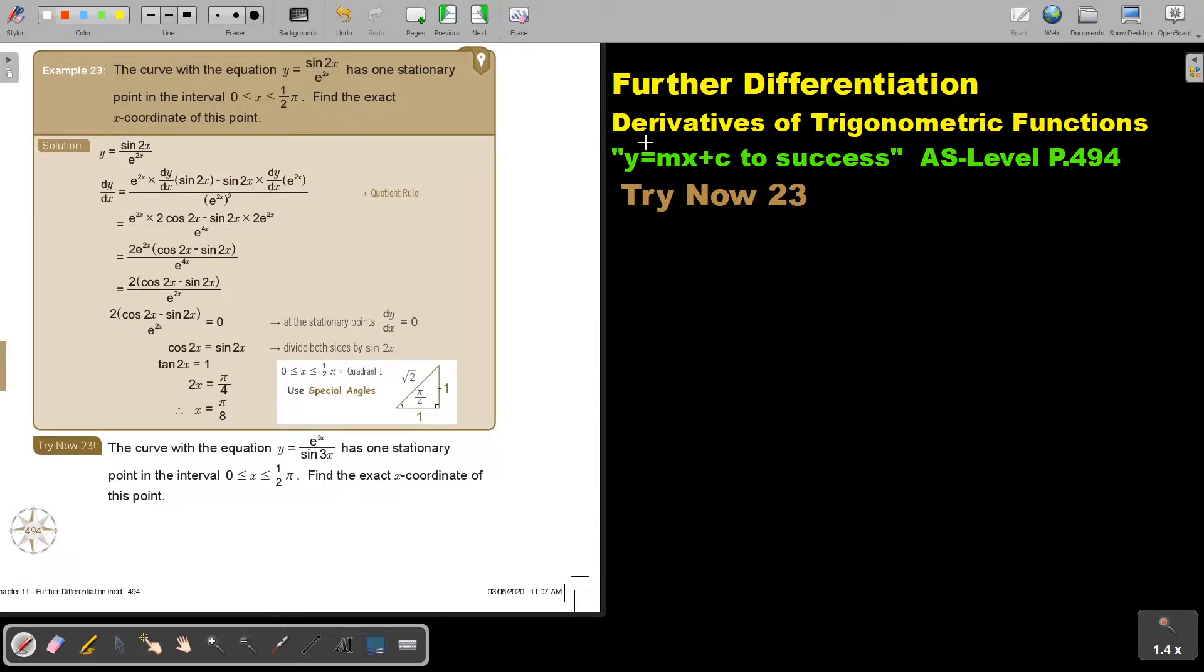Okay, we are going to continue in this video with derivatives of trigonometric functions. You will find this on page 494 in the Namibia AS level mathematics textbook Y equals MX plus C to success.